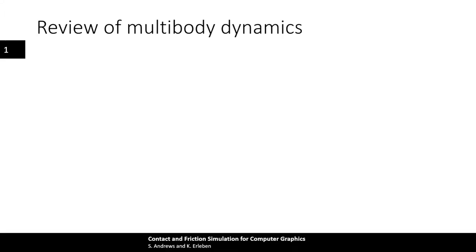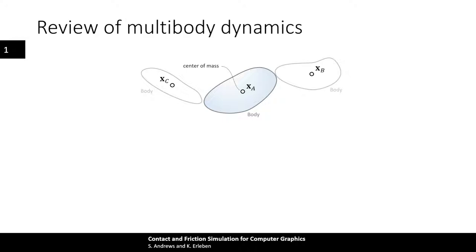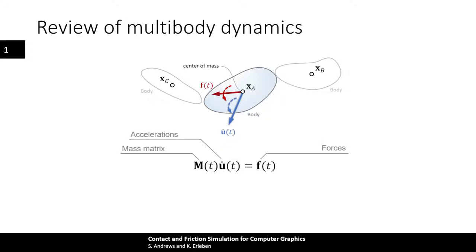Multibody simulation is exactly what it sounds like: you have multiple bodies moving around in space. These bodies have a position and a mass, but also kinematic and dynamic properties such as acceleration (shown here in blue) and forces (shown here in red). From a classical mechanics perspective, the movement is governed by Newton's second law, which determines the relationship between the acceleration of the bodies and the forces acting on them. Note that the mass, acceleration, and forces all depend on time.